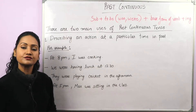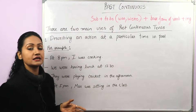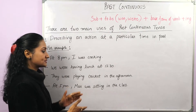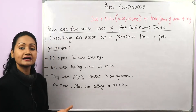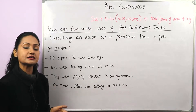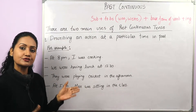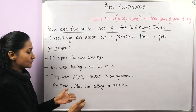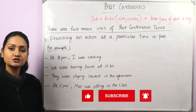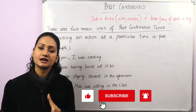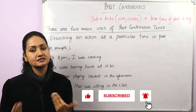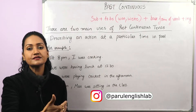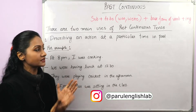'At 5 p.m. Max was sitting in the class.' The action of sitting started before 5 and continued till 5. If they had finished before that time, we would frame the sentence in simple past. So: whenever an action starts in the past and ends in the past, that is simple past; when it continues till a specific time in the past, that is past continuous tense.